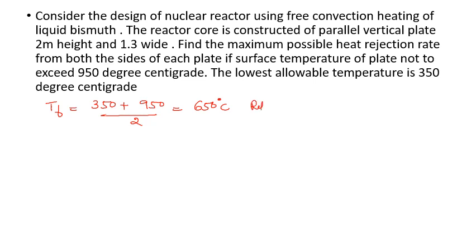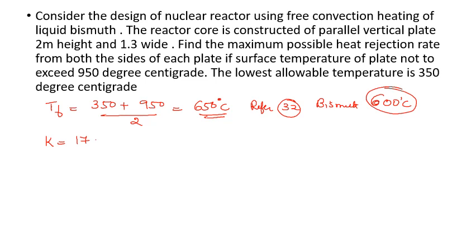The film temperature is T_f = (350 + 950) / 2 = 650°C. When we refer to the data handbook (page 32 for liquid metal properties), since there are no properties listed above 600°C, we use properties at 600°C. The properties are: k = 17.21 W/m·K, Prandtl number = 0.0091, and kinematic viscosity ν = 0.108 × 10⁻⁶ m²/s.